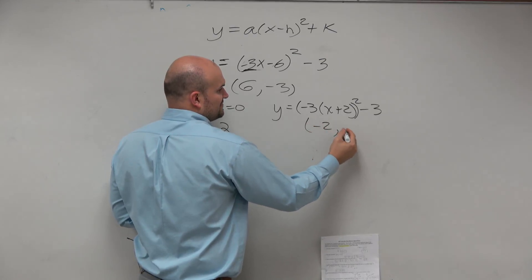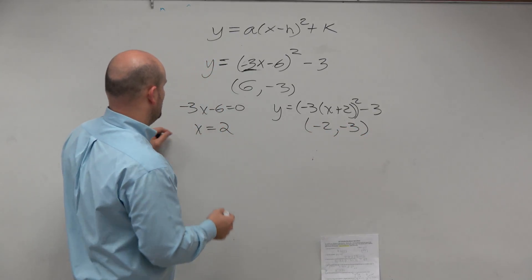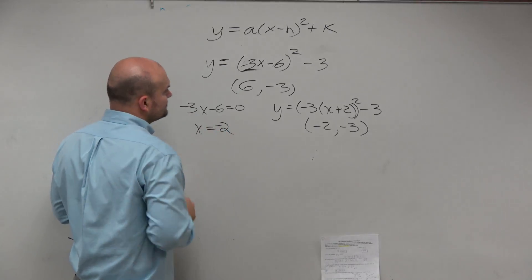So my vertex is negative 2, negative 3. Did I do that? That should be negative. Yeah. Okay?